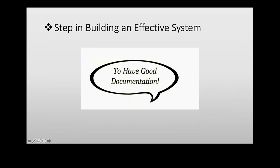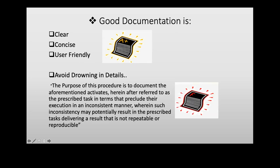When building an effective system, a good document should be clear, concise, and user-friendly. For example, the statement 'the purpose of this procedure is to document the aforementioned activity' is overly complicated and not user-friendly — staff may not be able to read between the lines. Avoid such complicated statements. Your document should be user-friendly and readable.